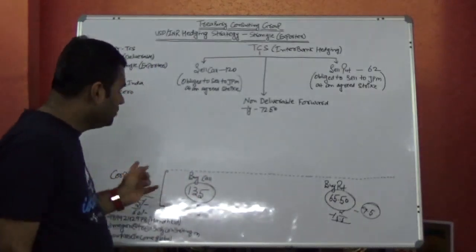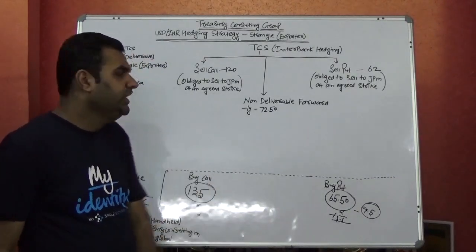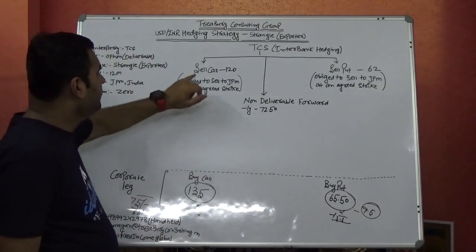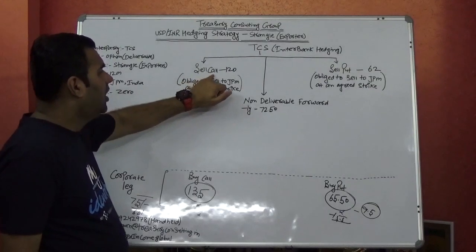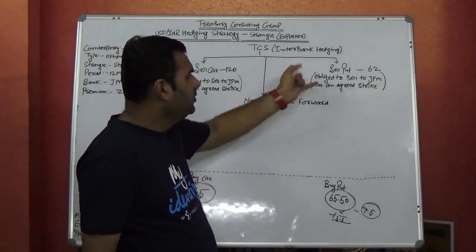Now let's go to the same Tokyo cut. What JP Morgan would be doing? What Chase would be doing? Chase would be creating the reverse position in the market. Here they would be creating sell call, which is this reverse, and sell put, which is this reverse.